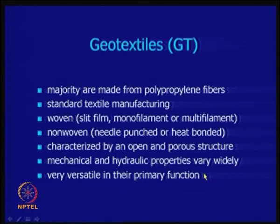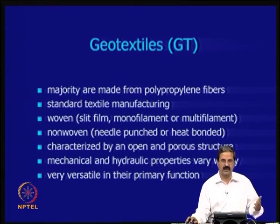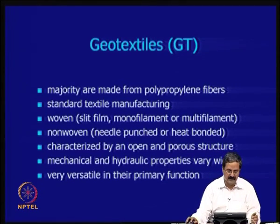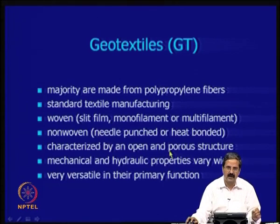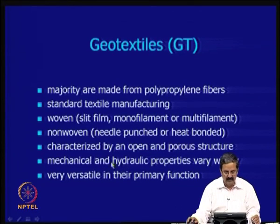Mechanical properties and hydraulic properties vary widely — you can design whatever mechanical or hydraulic properties you want, calculate them, and give a design. For example, if I want to increase bearing capacity from 7 to 20 tons per meter square, I can use geogrids. I can choose the quality of geogrids to improve that bearing capacity. They are very versatile in their primary function and very effective.